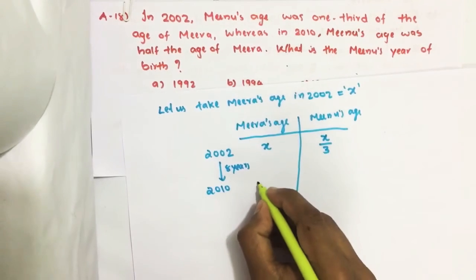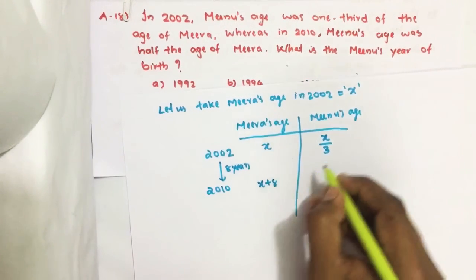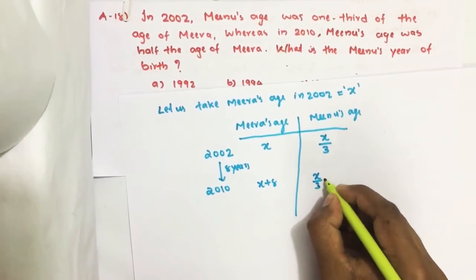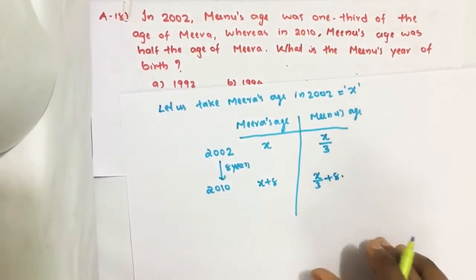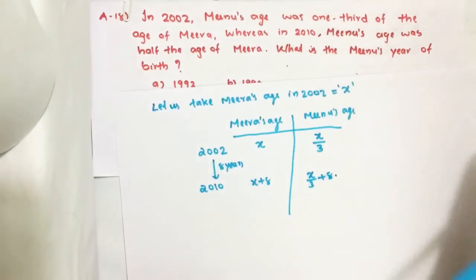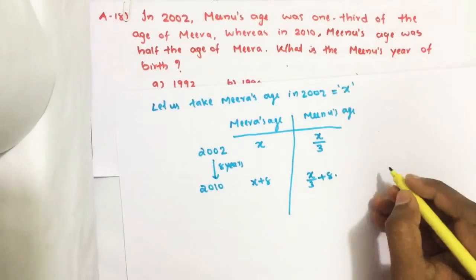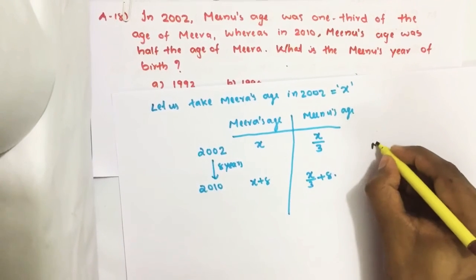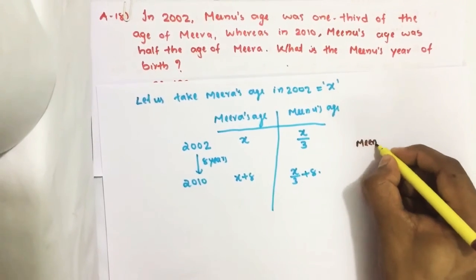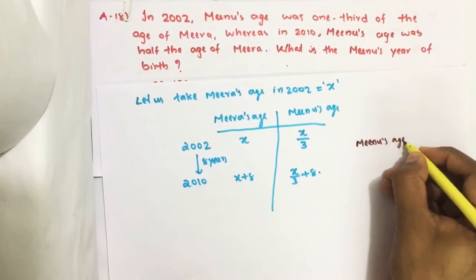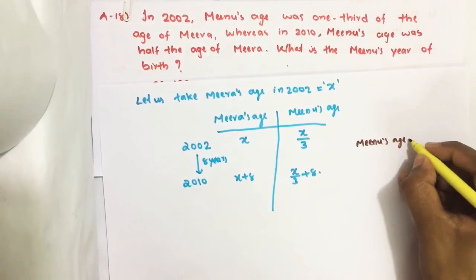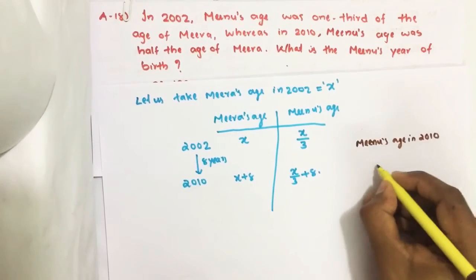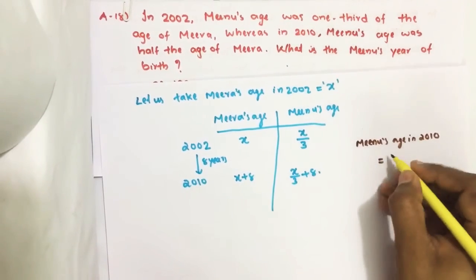Mira's age becomes X plus 8, and Minoo's age becomes X by 3 plus 8. And from the statement, it is given that Minoo's age in 2010 equals...